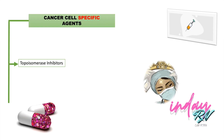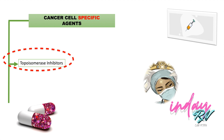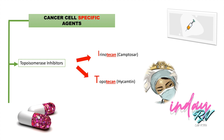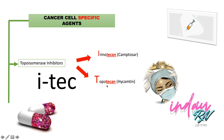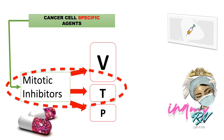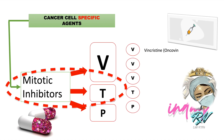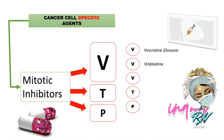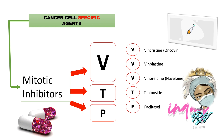The next cell-specific agent is the topoisomerase inhibitor. The medications here are irinotecan and topotecan — just remember irinotecan and topotecan. For mitotic inhibitors, the mnemonic is VTP: V for vincristine (Oncovin), vinblastine, vinorelbine; T for teniposide; and P for paclitaxel. Mitotic inhibitors — VTP — arrest metaphase by inhibiting mitotic tubular formation.